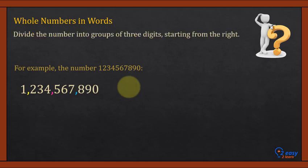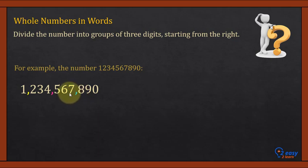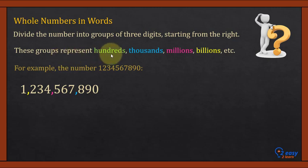The first rule is to divide the number into groups of three digits starting from the right. So the extreme right digits form the first group, then we place a comma, then the next three digits, place a comma, then the next three, and place a comma. These groups represent hundreds, thousands, millions, and billions.